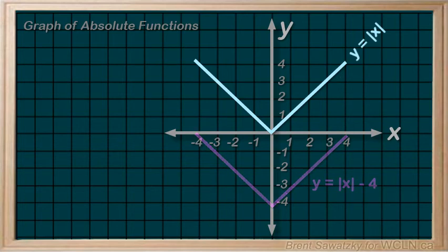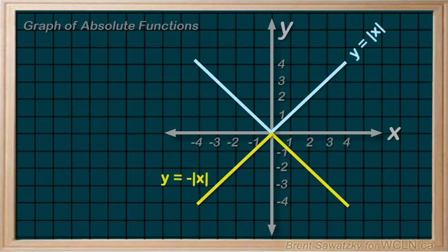For example, if we stuck a negative in front here, well, then just like our polynomial relationships, the graph reflects vertically.